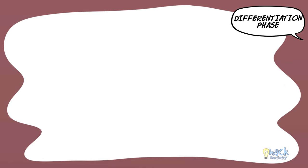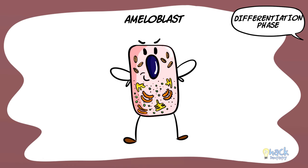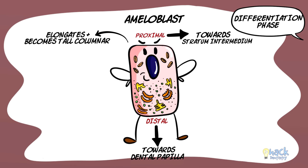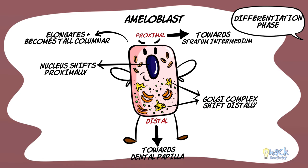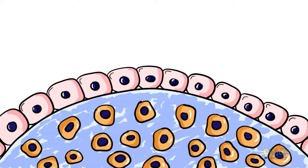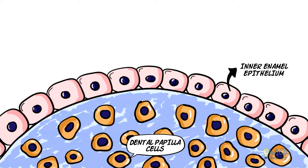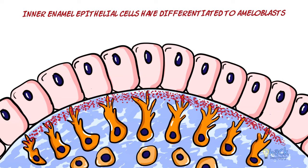During the phase of differentiation, the inner enamel epithelium starts to differentiate to become an ameloblast. The cell elongates and becomes tall columnar, and the nucleus that was previously central shifts proximally. The Golgi complex shifts distally towards the dental papilla, and mitochondria that were scattered begin to cluster proximally. Simultaneously, cells in the dental papilla differentiate to odontoblasts, thanks to signaling molecules from the differentiating inner enamel epithelia.